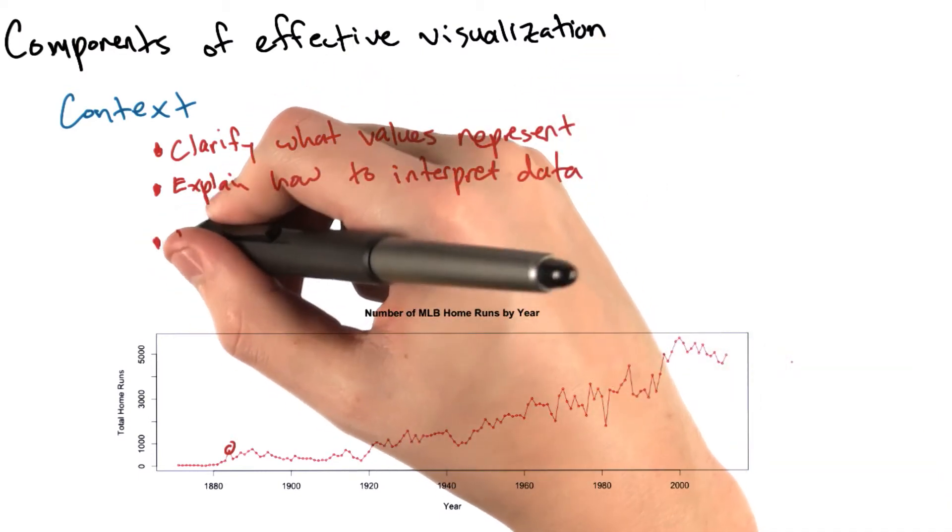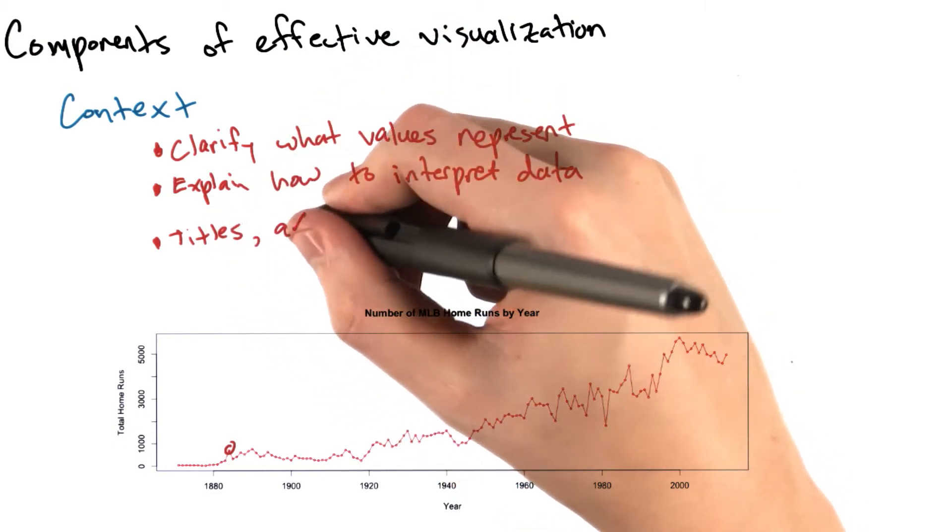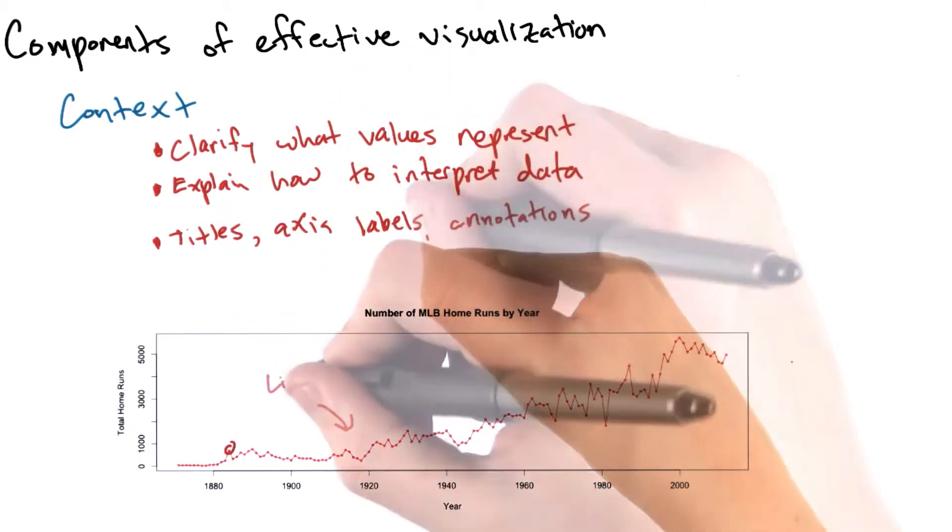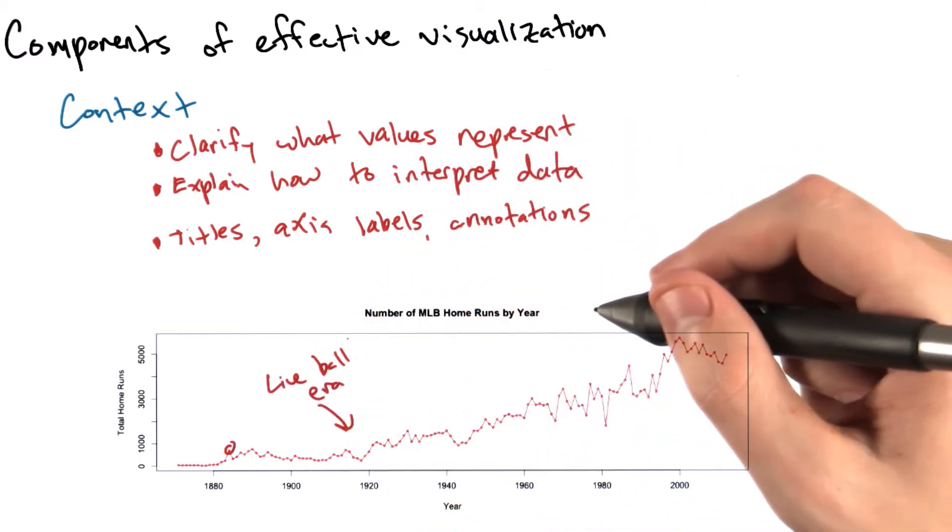And I could do a little bit more by annotating the chart potentially. There are a variety of things that might inform the total number of home runs hit in a particular year. Maybe the beginning of the live ball era, which we might put somewhere over here.